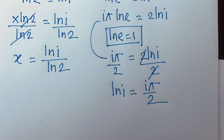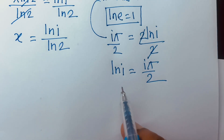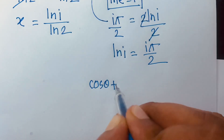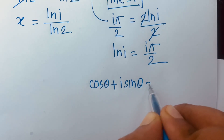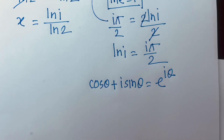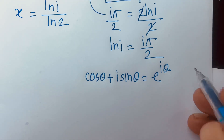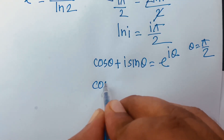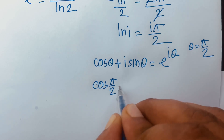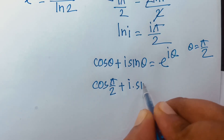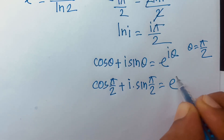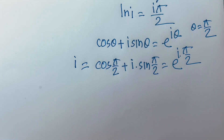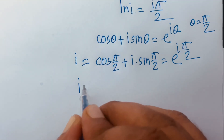Now we find the value of ln i using another method. We know that cos theta plus i sine theta is equal to e to the power i theta. Here, i corresponds to theta equal to pi over 2, so cos(pi/2) plus i times sine(pi/2) is equal to e to the power i times pi over 2. This means i is equal to e to the power i times pi over 2.